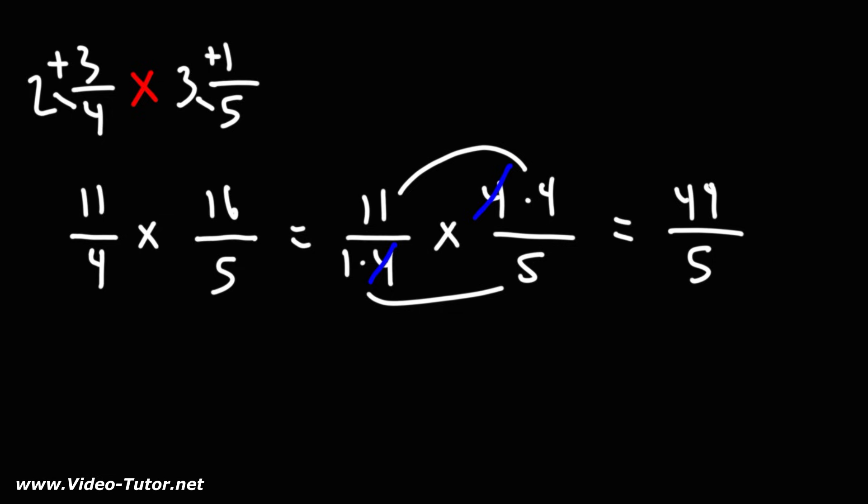So now we need to convert this improper fraction back to a mixed number. The highest multiple of 5, just under 44, is 40.